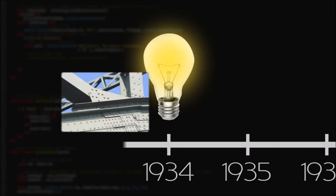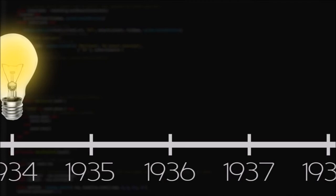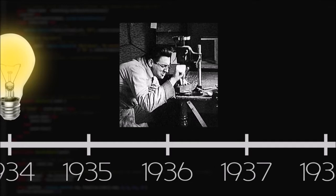While studying civil engineering in 1934, Zuse first had the idea of a mechanical device that could automate complex calculations, specifically statics calculations that took hours to do by hand. In 1936, Zuse quit his job as a design engineer and began work on the first-ever binary computer in his parents' Berlin apartment.